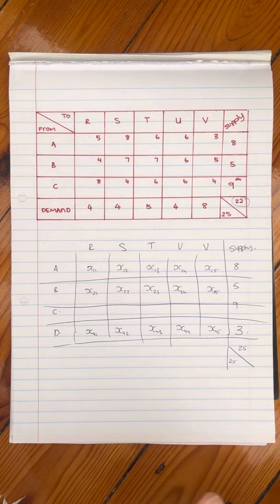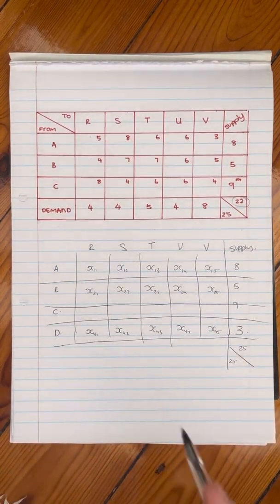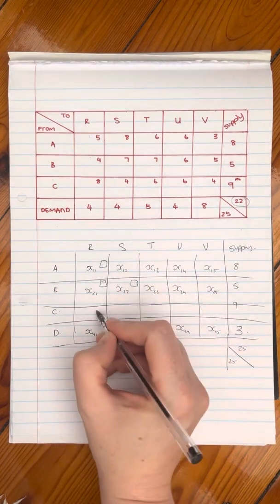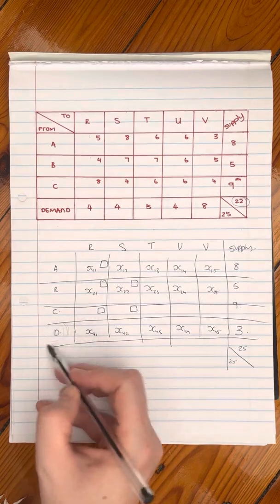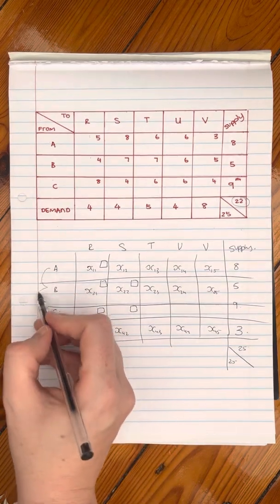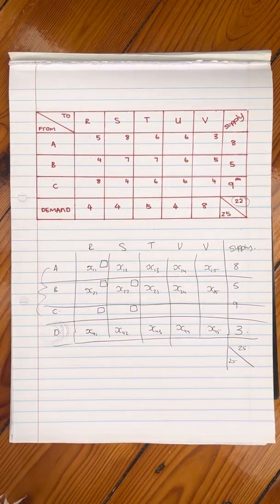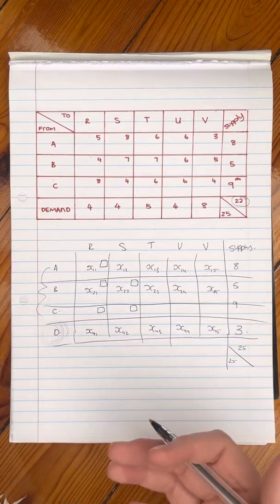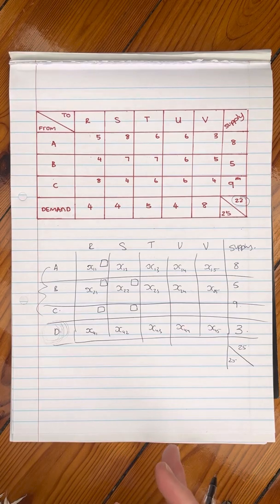But you don't actually want them to impact your objective function. Remember your objective function is usually minimizing cost. So instead of having values for the cost like the rest of them have, because there's an actual factory for them. So A, B, and C have an actual factory. D doesn't actually exist. So you want it so that it's not going to have an impact on your problem.